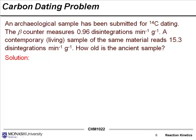So we have a sample problem here, a carbon dating problem. An archaeological sample's been submitted for carbon-14 dating and you can use a beta counter to measure the amount of disintegrations, these sort of radioactive disintegrations. So the beta counter measures 0.96 disintegrations per minute per gram. A contemporary living sample of the same material reads 15.3 disintegrations per minute per gram. So you might be thinking that's a pretty weird kind of unit, the good news is these units in our calculations effectively cancel with each other, so it doesn't really matter what the units are, they're going to cancel. Question: how old is the ancient sample?